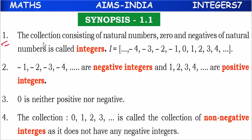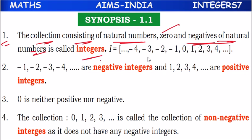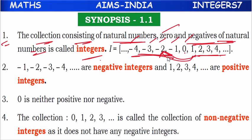The integers means: collection consisting of natural numbers, 0, and negatives of natural numbers, is called integers. So 1, 2, 3, 4 are natural numbers; 0; and minus 1, minus 2, minus 3, minus 4 — these are negatives of natural numbers. This entire collection is called integers.